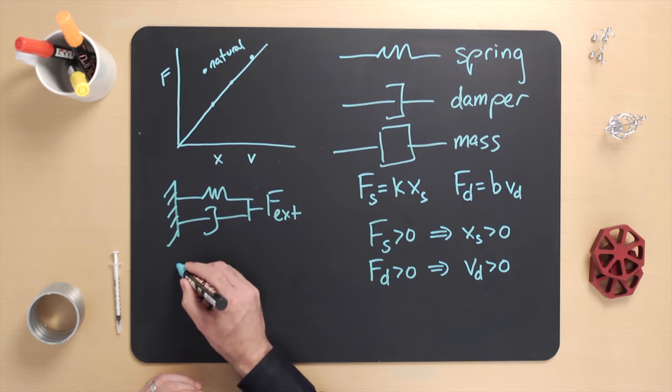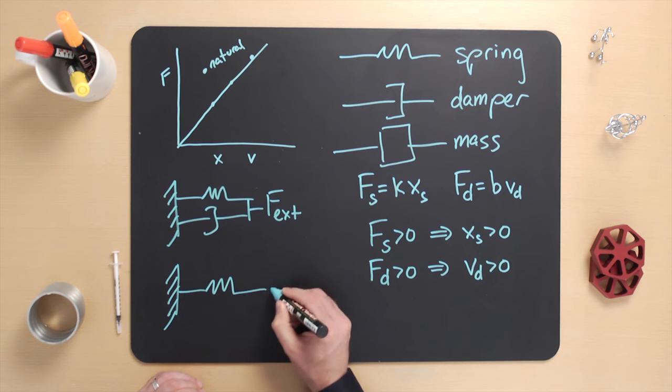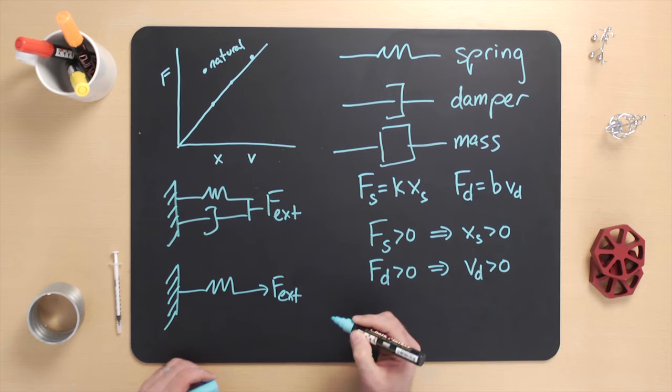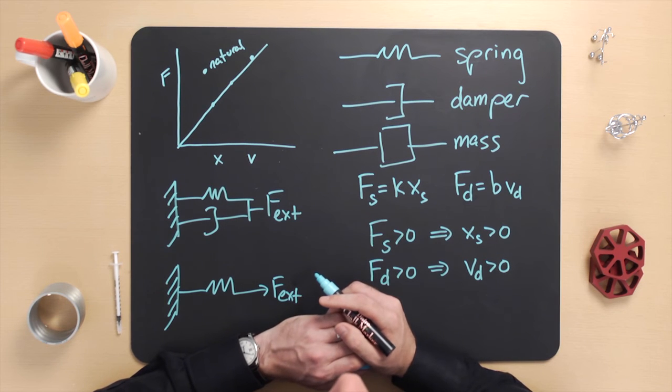Sometimes our understanding of a physical system will not be well aligned with our understanding of idealized elements. As an example, consider this very simple system: again, we have a wall, a spring, and an external force acting on that spring. There's no mass in this system. When the spring is in extension, the force is defined to be positive, and when the external force is positive, it is pulling the spring into extension. What does our constitutive law say about what happens if f external starts out zero and then suddenly becomes positive?